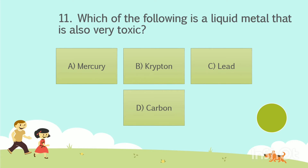Question No. 11. Which of the following is a liquid metal that is also very toxic? Option A: Mercury. Option B: Krypton. Option C: Lead. Option D: Carbon. Your time starts now. The answer is Option A: Mercury.